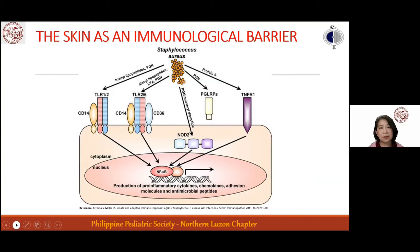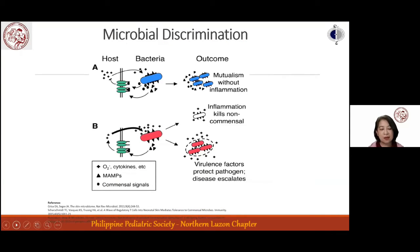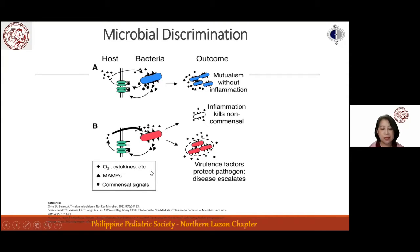Despite constant exposure to large numbers of microorganisms, the skin discriminates between harmless commensal and harmful pathogenic microorganisms. The mechanism may involve immune tolerance induction. Toll-like receptors may be desensitized by prolonged exposure to commensals through decreased TLR expression or activation of TLR pathway inhibitors. When pathogenic microbes enter, keratinocyte PRRs are activated, recognizing PAMPs and producing chemokines, cytokines, and antimicrobial peptides to eradicate the pathogen.